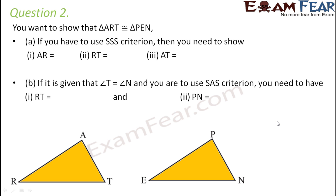Question number 2. You want to show that triangle ART is congruent to triangle PEN. If you have to use SSS criteria, then you need to show that AR is equal to, this side should be equal to its corresponding side, which is PE. RT, this side should be equal to the corresponding side, which is EN. Again, AT, this side should be equal to the corresponding side, which is PN.